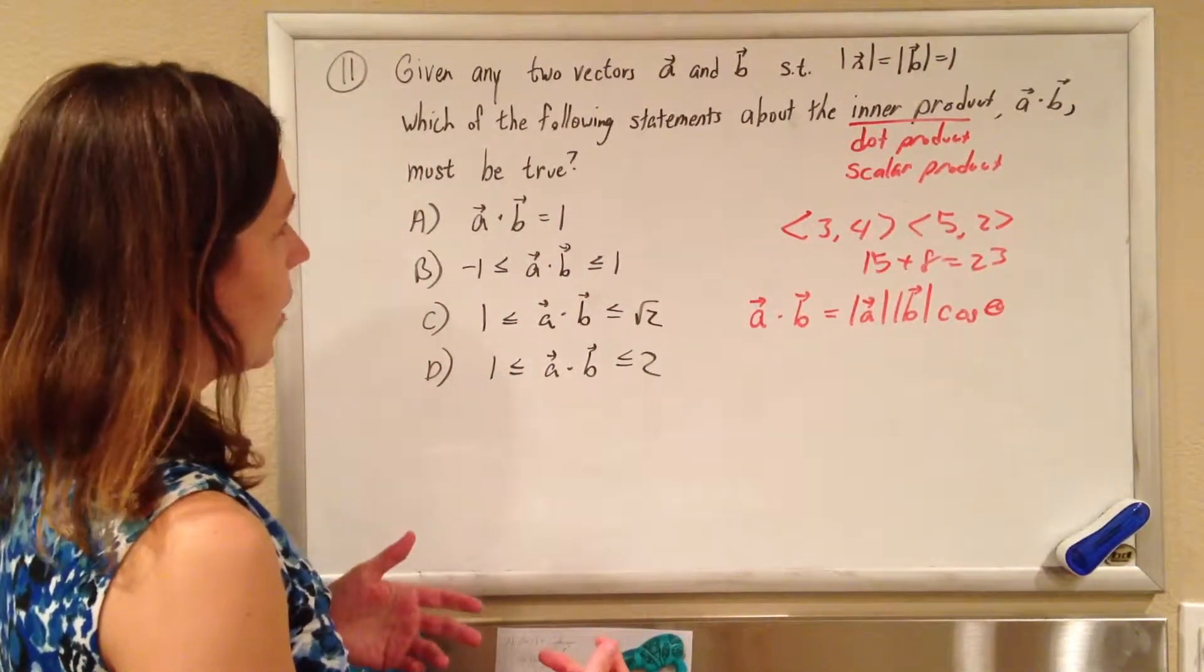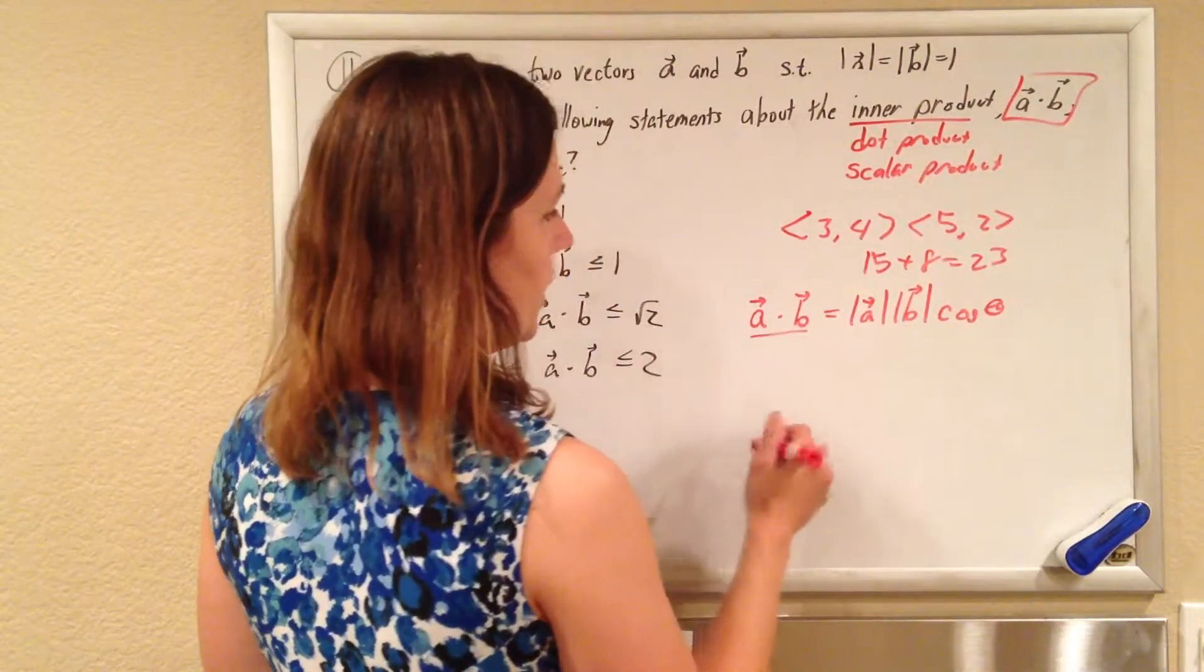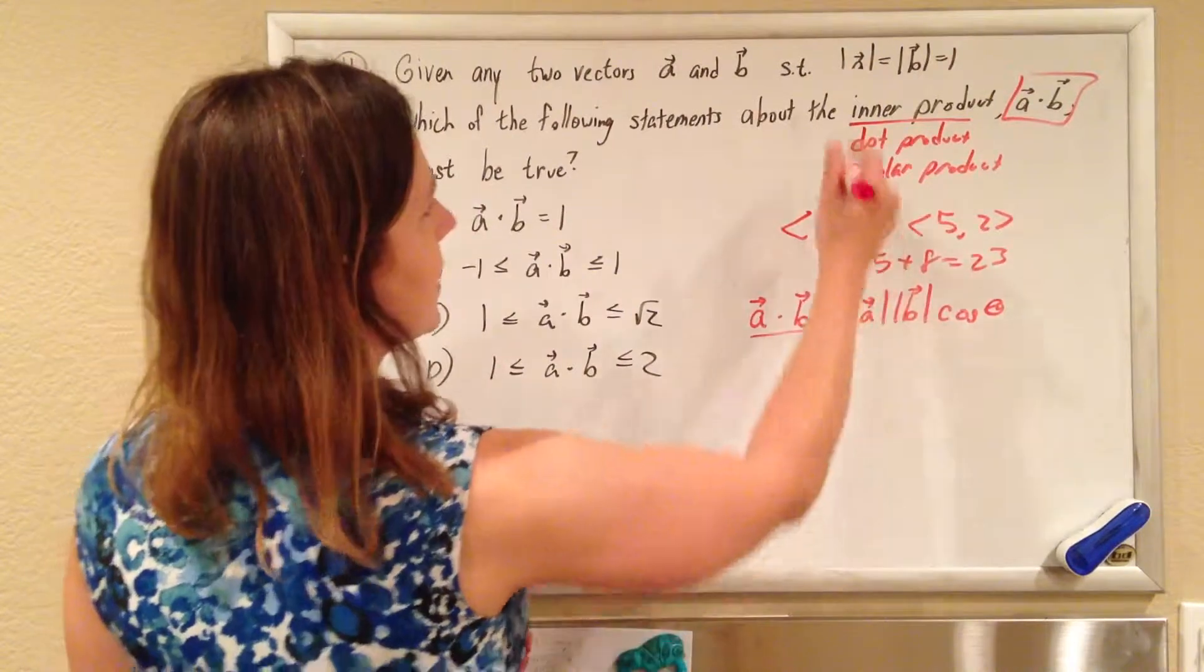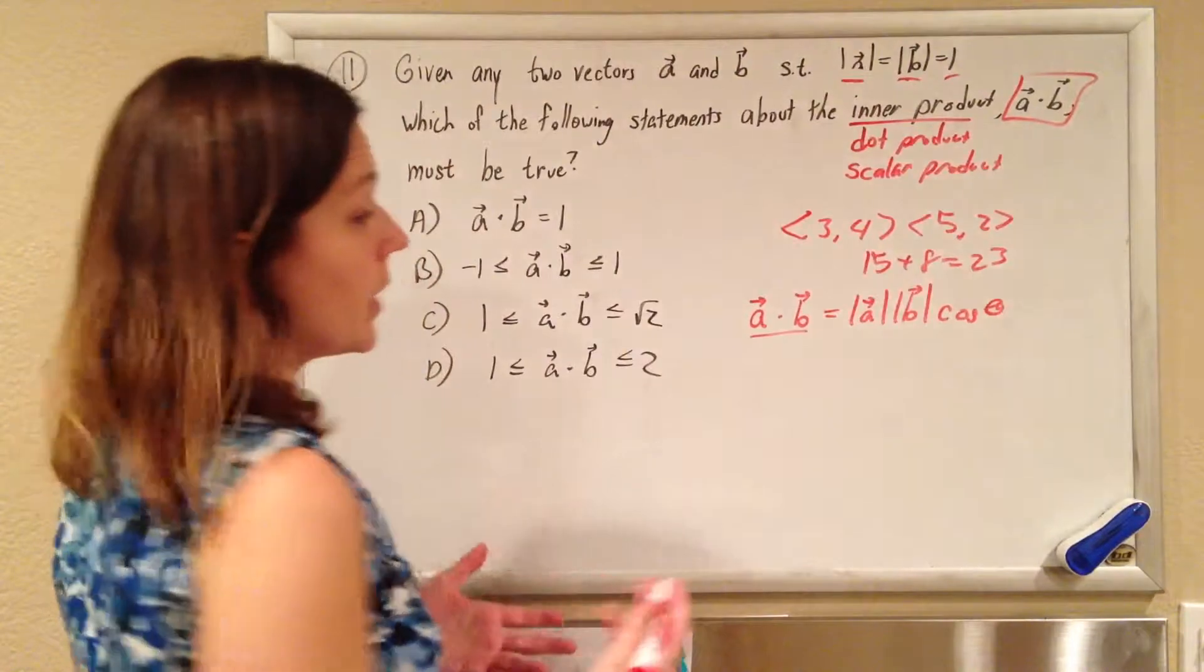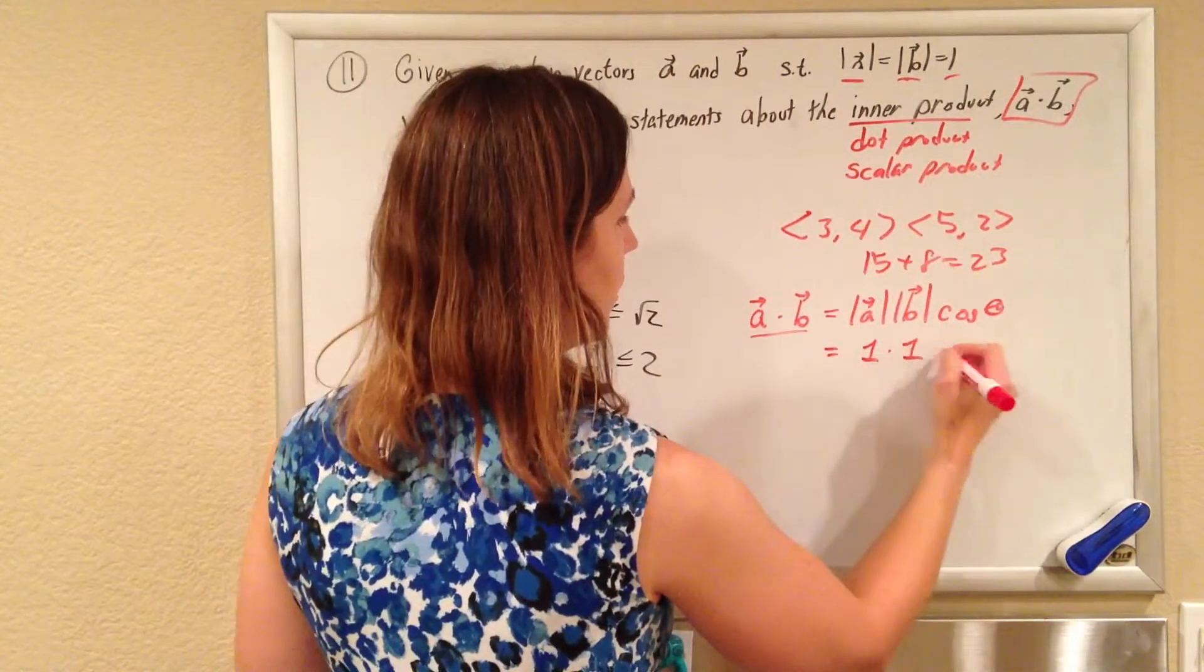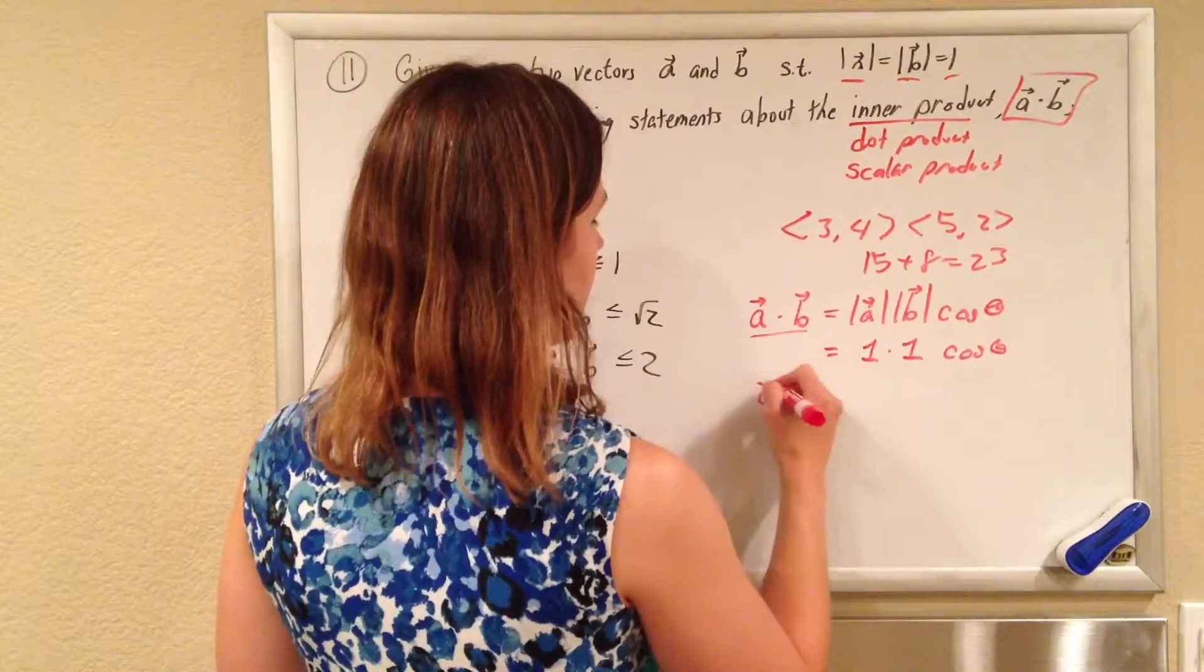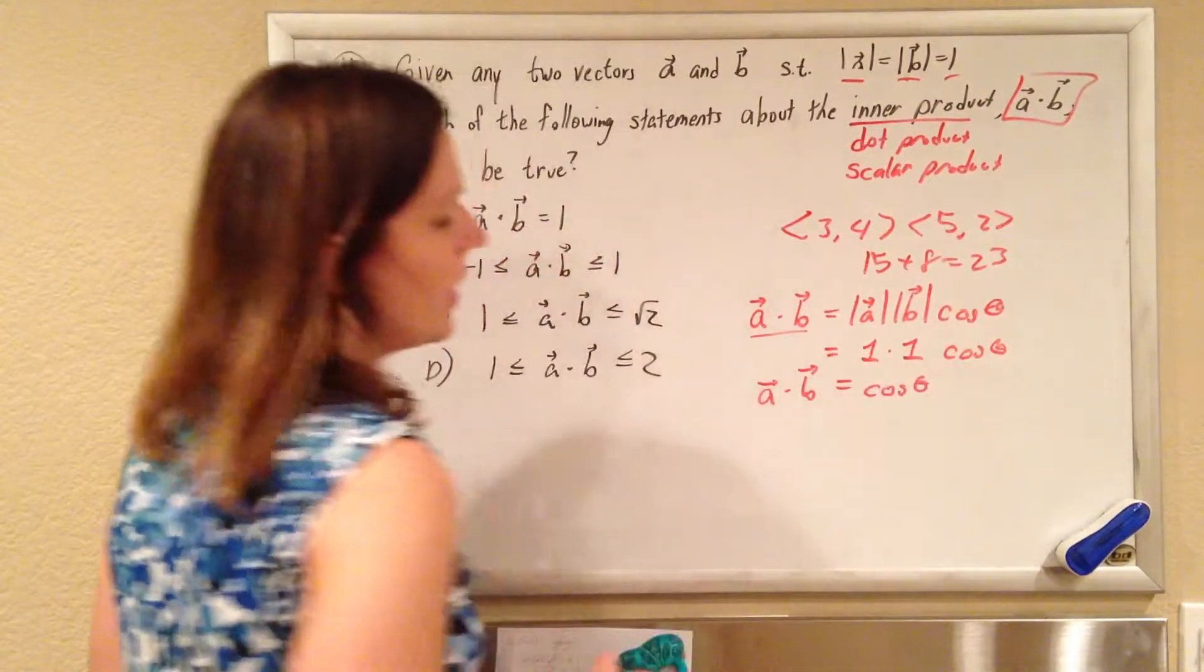Okay, so now they want to know about A dot B, and so we've got A dot B. It's the magnitude of A times the magnitude of B, and I think they told me that the magnitude of A and the magnitude of B are both one. So we'll put that in. So this is one times one times the cosine of theta. So A dot B has to equal the cosine of theta.